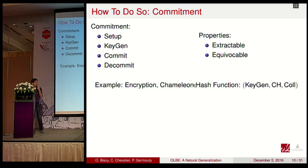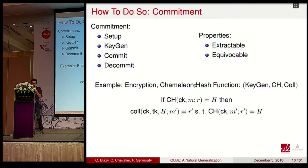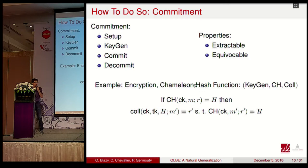A chameleon hash function is an example of an equivocable commitment. It is a hash function with an additional algorithm called collision, which allows the person who knows the trapdoor key to find a random r' and a message m' such that hash(m', r') equals hash(m, r). So it is an equivocable commitment.